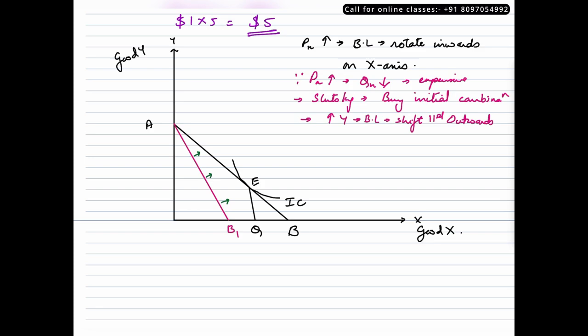So let us say this is the new budget line, the one in green. Let me name it as LM. So this budget line LM is passing through point E, which was the initial combination.